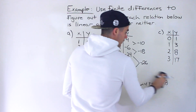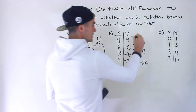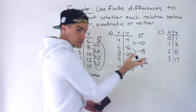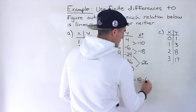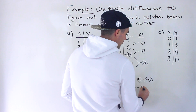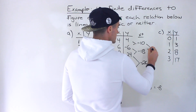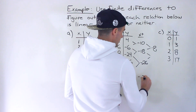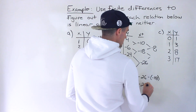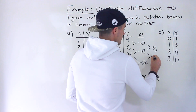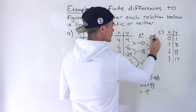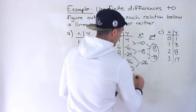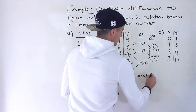Notice the first differences are not constant. So let's check the second differences. We take differences of the first differences — bottom minus top. Negative 18 minus negative 10 is like negative 18 plus 10, which gives negative 8. Then negative 26 minus negative 18 is negative 26 plus 18, which also gives negative 8. The second differences are constant, so we are dealing with a quadratic.